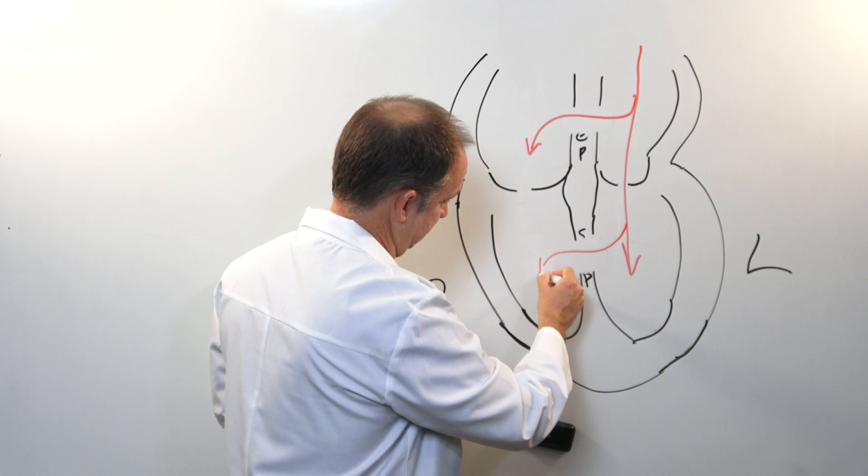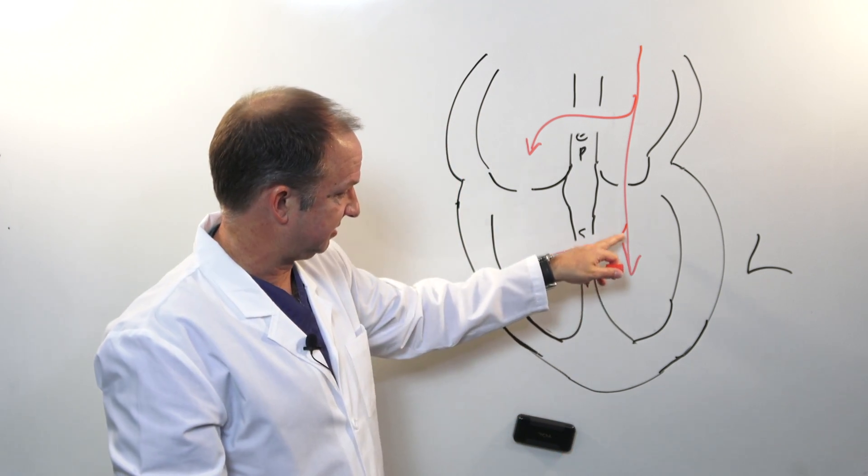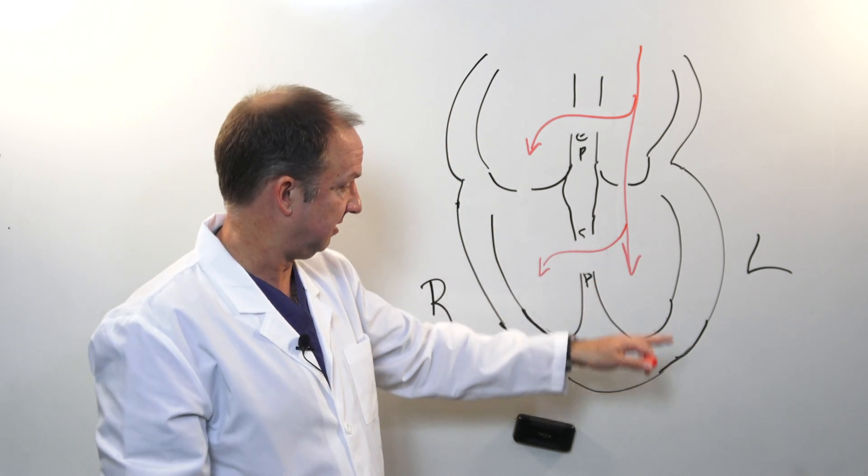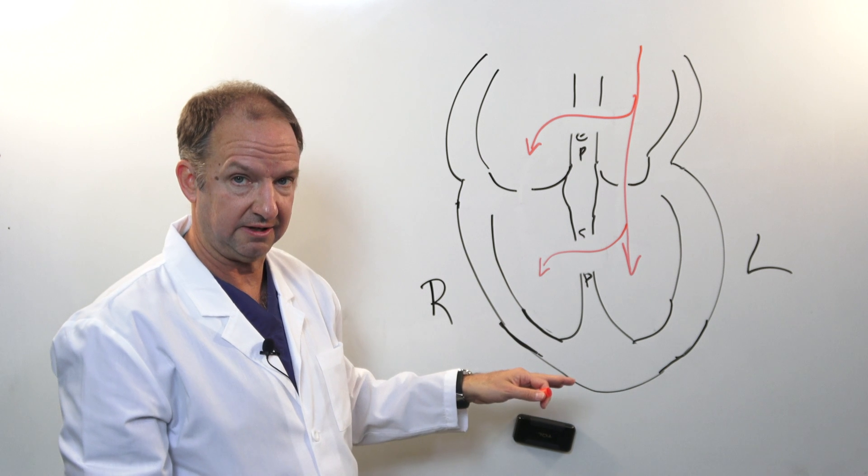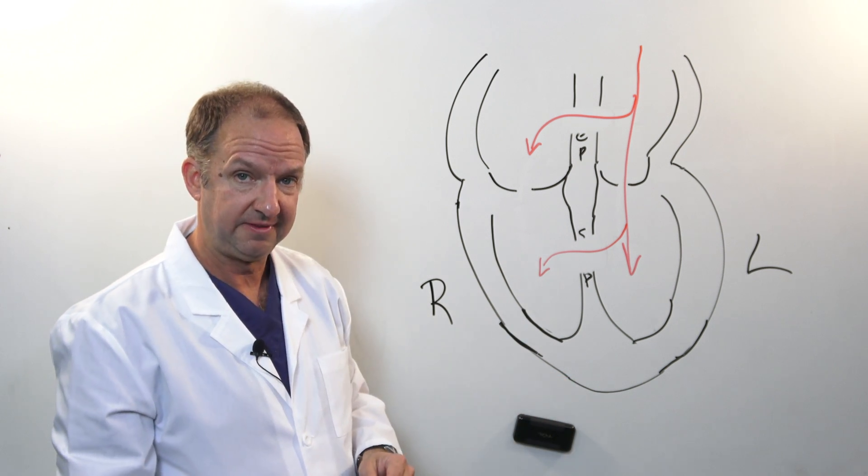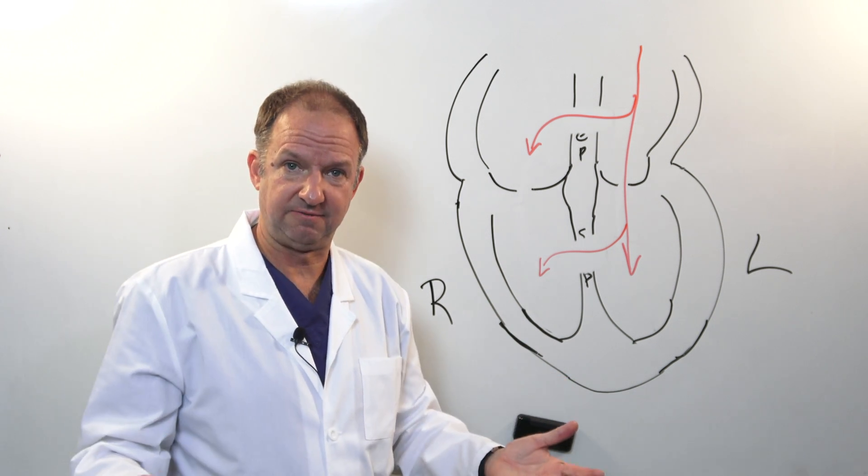again blood then doesn't only move in this direction and out of the heart but also starts filling up the right side of the heart which goes to your lungs. That's how you get congestive heart failure.